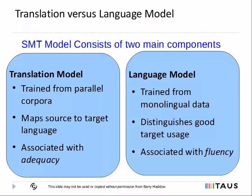The SMT model consists of several components, for example, models to improve reordering and make sure the length is appropriate. But the two most important components are the translation model and the language model. The language model is built from monolingual data and only in the target language, whereas the translation model requires parallel corpora which is generally in shorter supply since it needs to be created by translators. The language model is used to guide the SMT system towards output which reads well in the target language, whereas the translation model predicts translations of source words or short segments. So roughly speaking, we can associate the translation model with adequacy — assuring that the translation preserves the meaning of the source — and the language model with fluency — assuring that the translation makes sense in the target language. But unfortunately there's lots of interaction between the two models, so we can't directly correlate improvements in the language model with improvements in fluency.